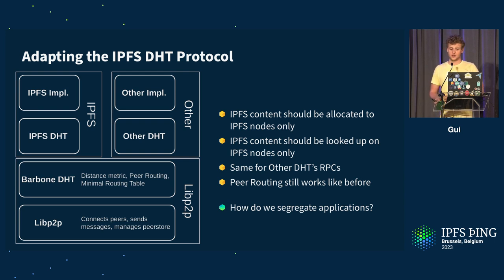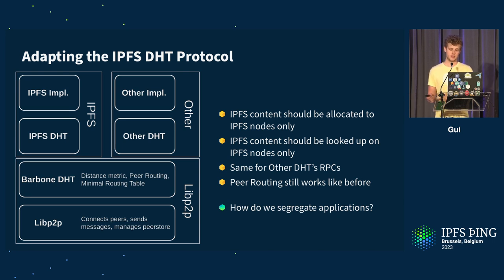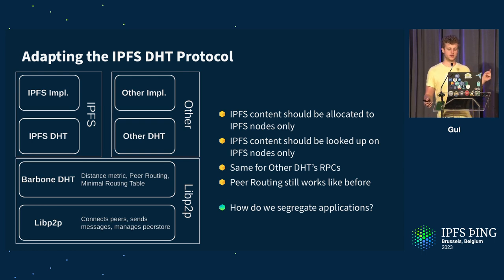To make this work, we need to adapt the protocol so that IPFS content is allocated on IPFS nodes only, not on other nodes. When looking up IPFS content, you should query only IPFS peers, not all LibP2P DHT peers — and the same applies to all other applications. Peer routing, however, would work exactly the same way. We need to find a way to segregate applications so that an RPC only reaches peers running that application.